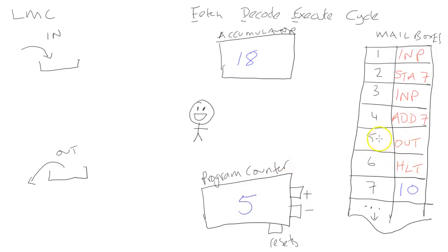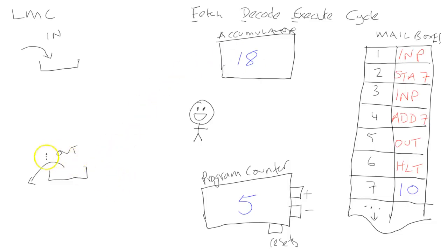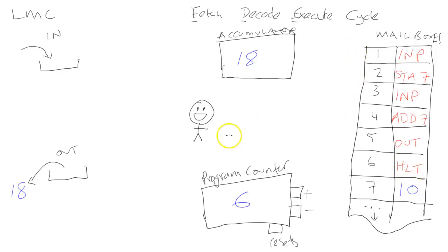Position five says 'out', so he takes the 18 from the accumulator and transfers a copy to the out-tray. 18 goes into the out-tray while still remaining in the accumulator. He increments the program counter to six, walks to position six which says 'halt', and executes that command — meaning the job is done and he can stop. That is the basic principle of how a computer works.